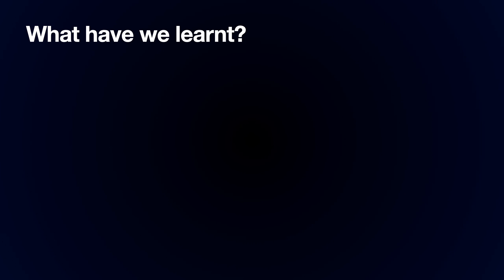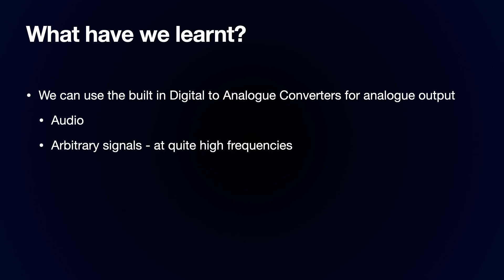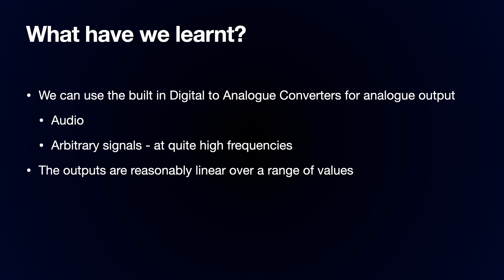So what have we learnt? We can use the built-in digital-to-analogue converters to output analogue signals directly from the ESP32. We can output audio data and we can output arbitrary signals at reasonably high frequencies. The outputs are reasonably linear over a range of values, but we are limited to 8-bit resolution, so high-end audio is probably not an option. Apart from that, this is a pretty simple way to get analogue data out of the ESP32.